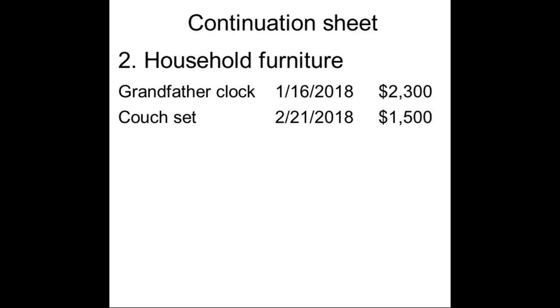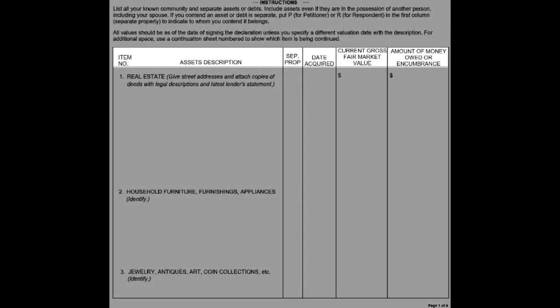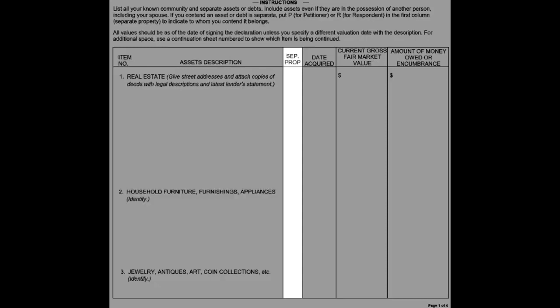If enough space is not provided on a question, use a continuation sheet numbered to show which item is being continued. The column categories are: item number, asset or debt description, separate property, date acquired, current gross fair market value, and amount of money owed or encumbrance. Item numbers range from 1 through 27 and all must be filled out. If an item number does not apply to you, write 'none' for the asset description and leave the rest of the column categories blank.